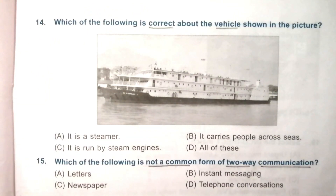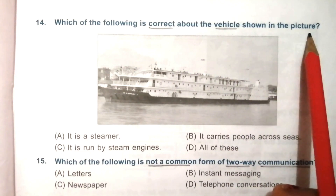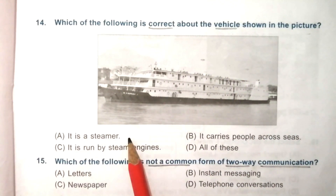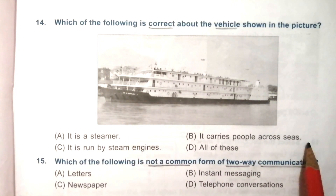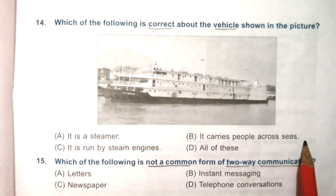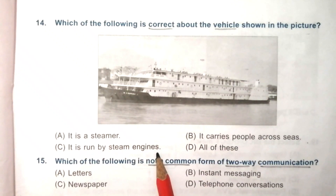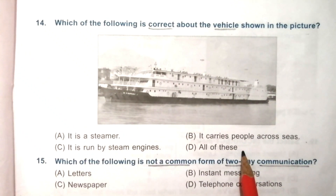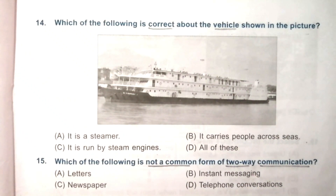Question 14: which of the following is correct about the vehicle shown in the picture? Options are: it is a steamer, it carries people across seas, it is run by steam engines, all of these. The answer is D — all of these.